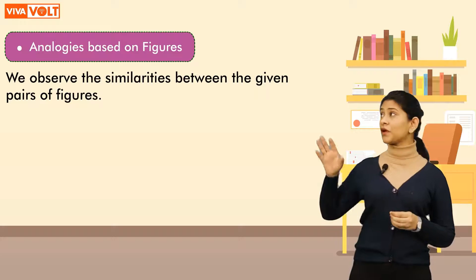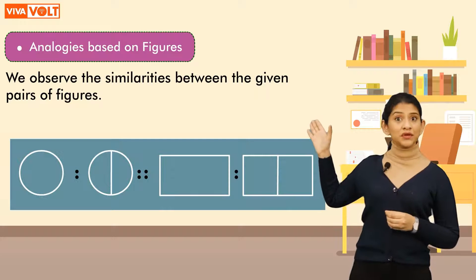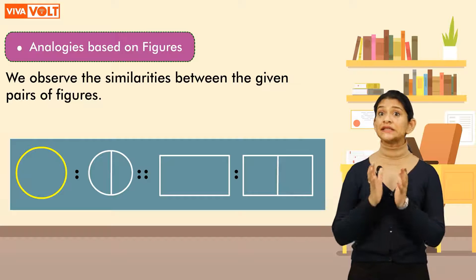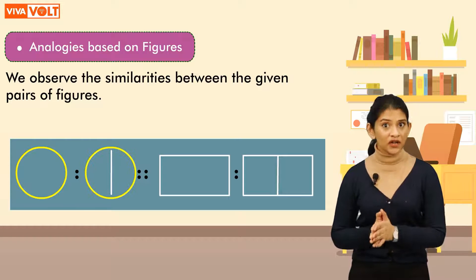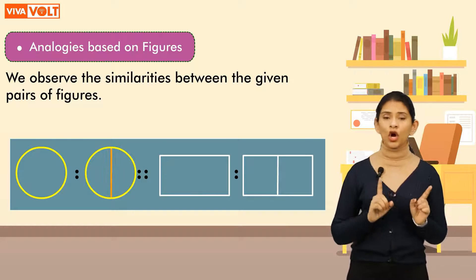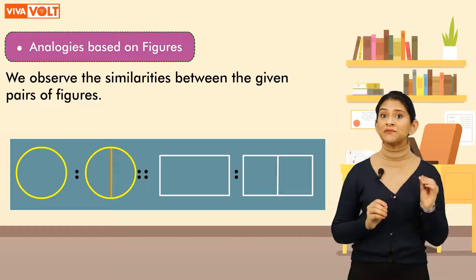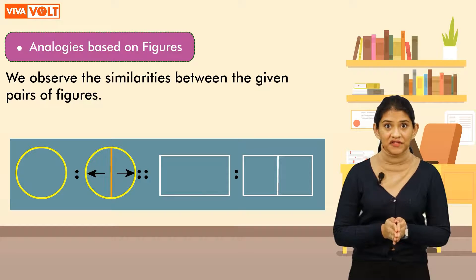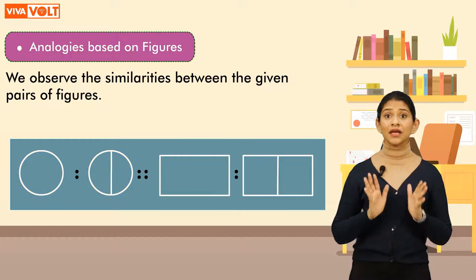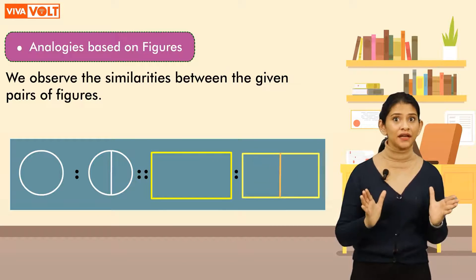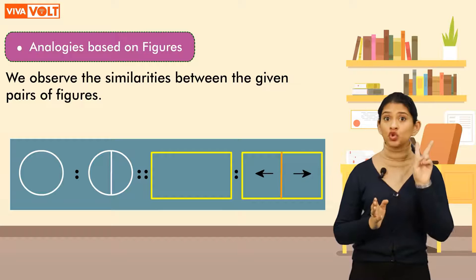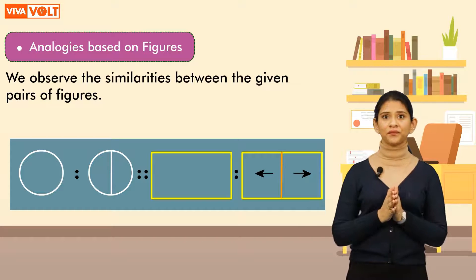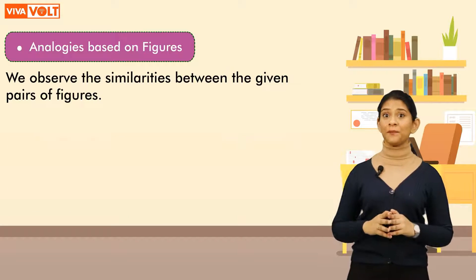Let's look at an example. The first figure on the left is a circle. The next figure is also a circle, with the difference that it has been divided into two equal halves by a line. Similarly, a rectangle is divided into two equal halves on the right side.